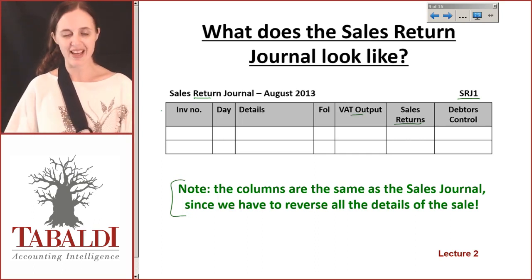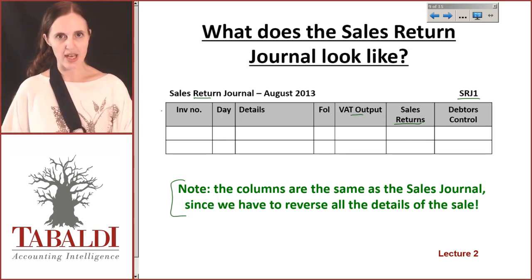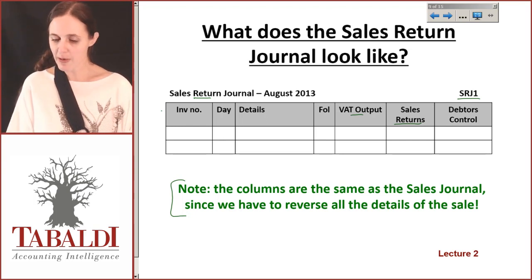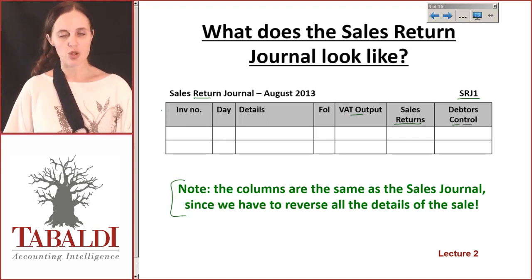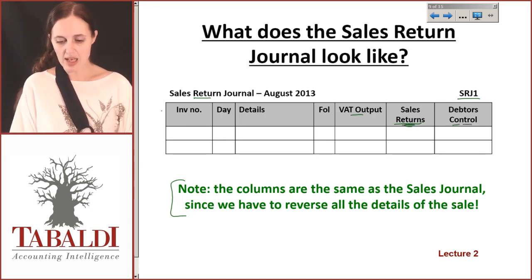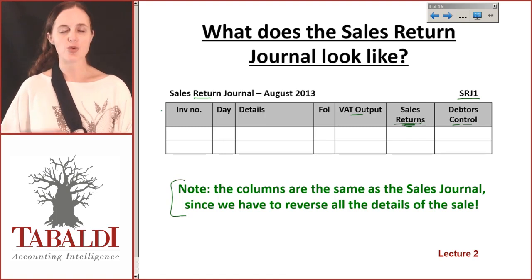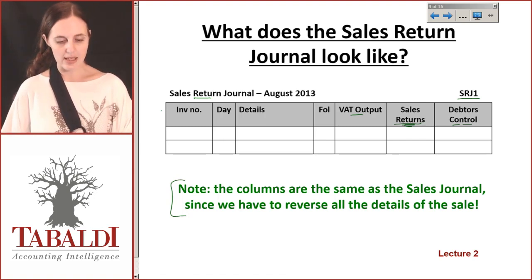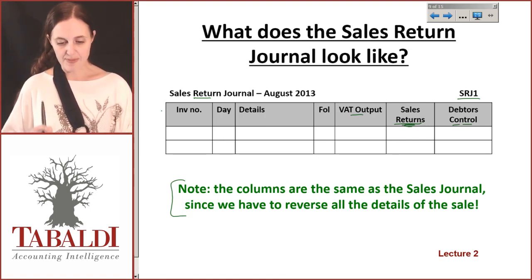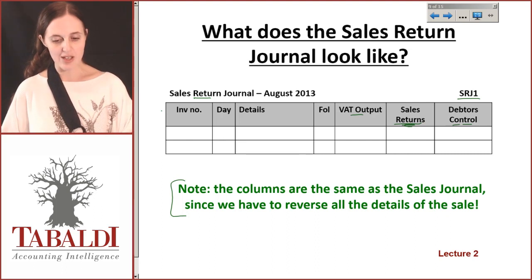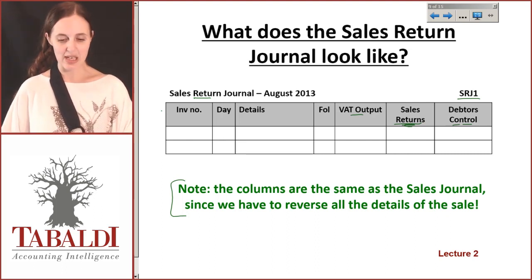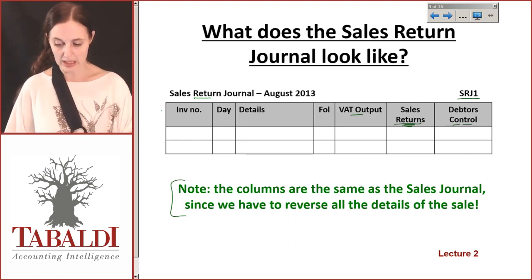So if we recorded VAT output, we must then reduce that and reduce the VAT output. If we recorded debtors control, we've got to record that it's decreasing, and our sales returns account shows that our sales are decreasing as well. But for the most part, the sales return journal does look the same as our sales journal itself.